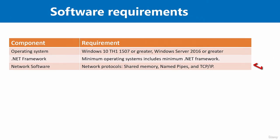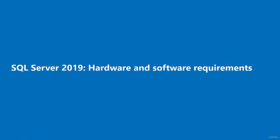Regarding network software, if you have Windows 10 or Windows Server 2016 or greater, you should have network protocols — shared memory, named pipes, and TCP/IP — pre-installed and available once the operating system is installed. In this video, I briefly listed some hardware and software requirements needed to install SQL Server 2019. Thank you for watching.